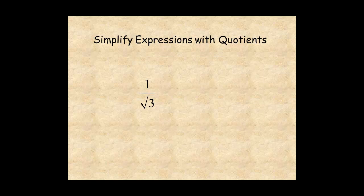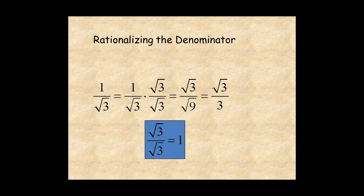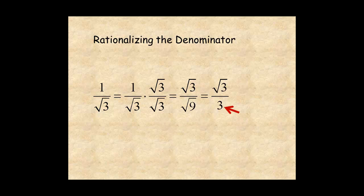In this example, the quotient property doesn't help at all. The ratio 1 over 3 doesn't simplify. Instead, use a process called rationalizing the denominator. Multiply 1 over radical 3 by radical 3 over radical 3. Notice that radical 3 over radical 3 is equal to 1, so this doesn't change the value of the expression. The expression then becomes radical 3 over radical 9, which simplifies to radical 3 over 3.